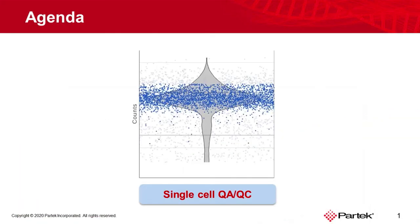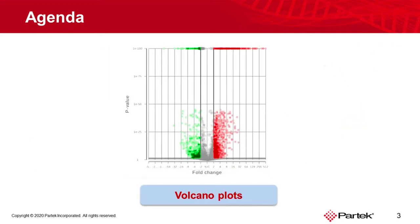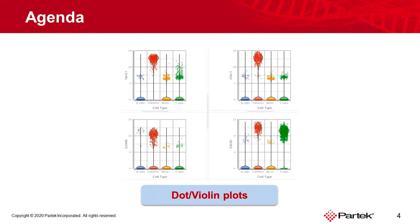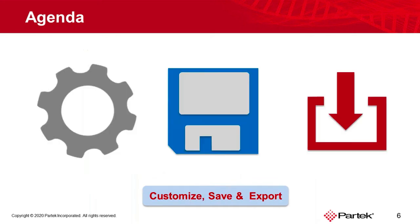The first topic we'll discuss will be single-cell QA/QC visualizations. Then we'll talk about dimensionality reduction with PCA and UMAP, followed by displaying the results of differential gene expression analyses with volcano plots, and then dot plots and violin plots. If we have time, I'll discuss heat maps. Along the way, you'll learn how to use configuration options to customize and save plots, and how to export them as image files.